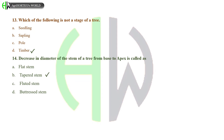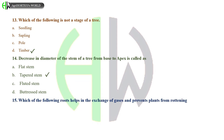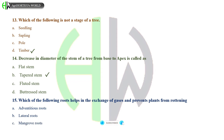Which of the following roots helps in the exchange of gases and prevents plants from rotting? Options: Adventitious roots, Lateral roots, Mangrove roots, or Tap roots. And the correct answer is Mangrove roots.